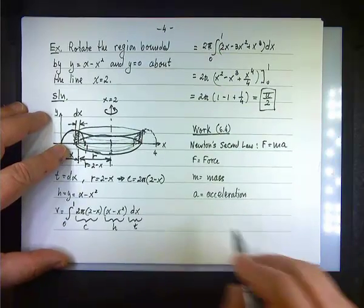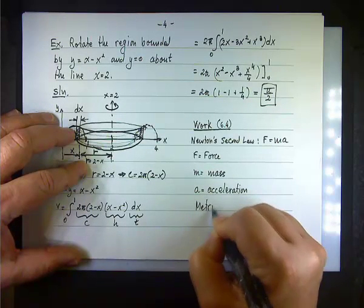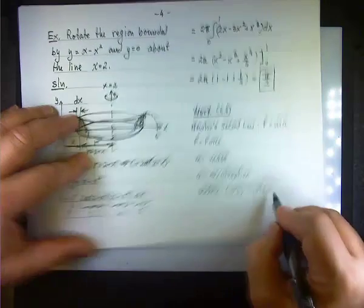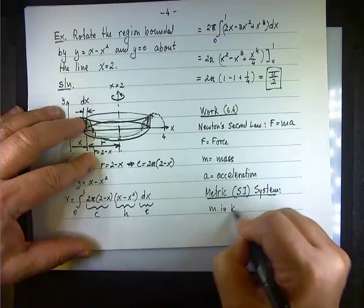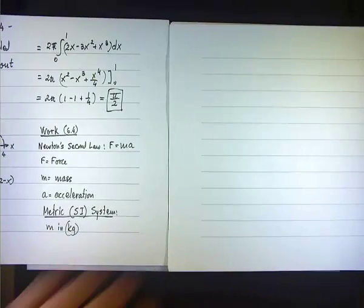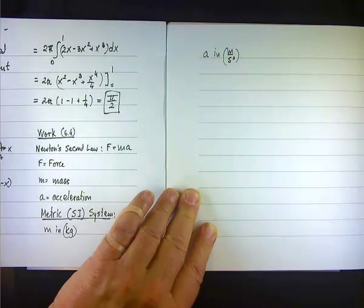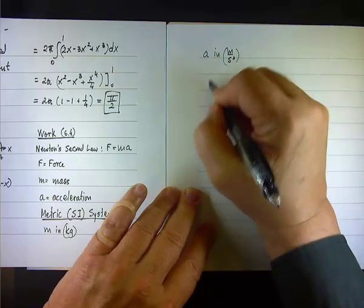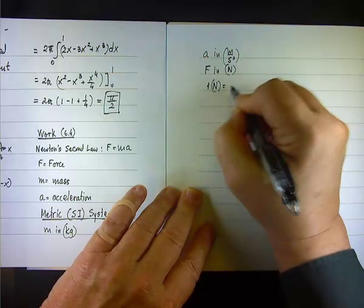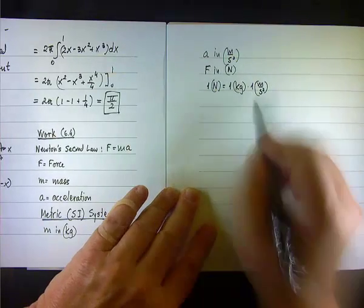In the metric or SI (Standard International) system, the mass is given in kilograms and the acceleration is in meters per second squared. We define the force as the Newton — one Newton equals one kilogram times one meter per second squared. That's the definition of the Newton.